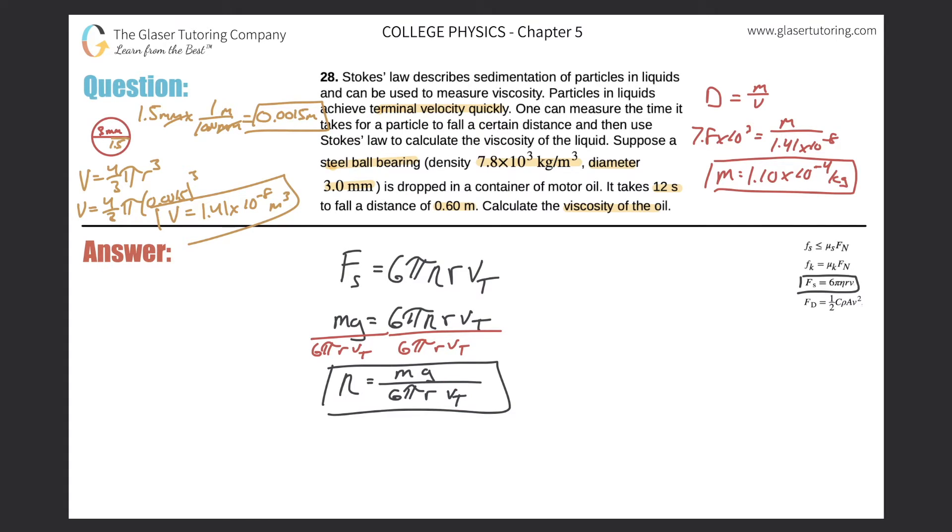Let's see what they gave us. They said that it's dropped in a container of motor oil and it takes 12 seconds to fall a distance of 0.6 meters. They also tell us that it achieves terminal velocity quickly. We're not going to go into that much depth here, but they're telling us it achieves it relatively quickly. So what I'm going to assume is that it basically achieves it right away. Is that reasonable or not? I think there'd be a small margin of error here, but it shouldn't make that tremendous amount of difference.